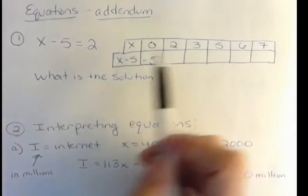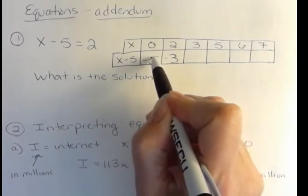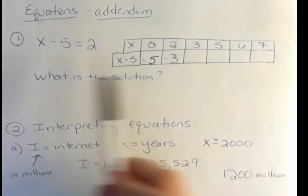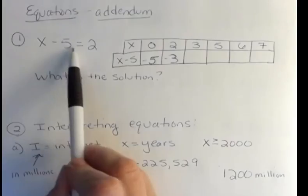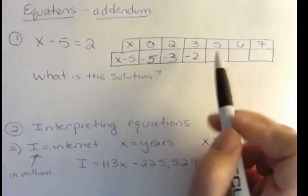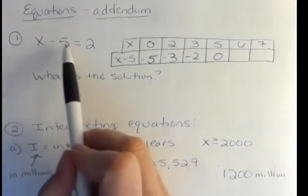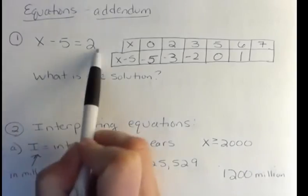If x was 2, you'd have 2 minus 5, and that would be negative 3. And what they want you to see here is that when you have this value, whatever they're giving you, and you plug it in, you're not getting this answer. 3 minus 5 is negative 2, 5 minus 5 is 0, 6 minus 5 is 1, 7 minus 5 is 2.